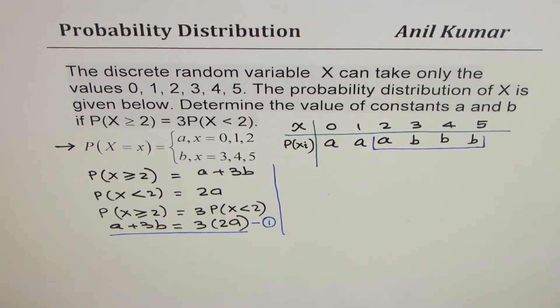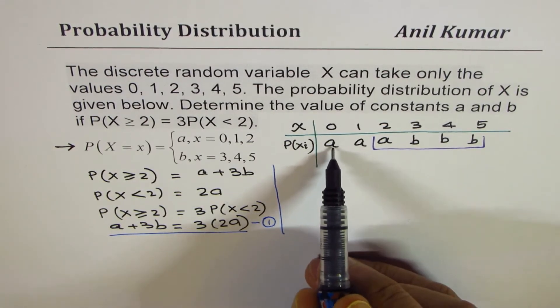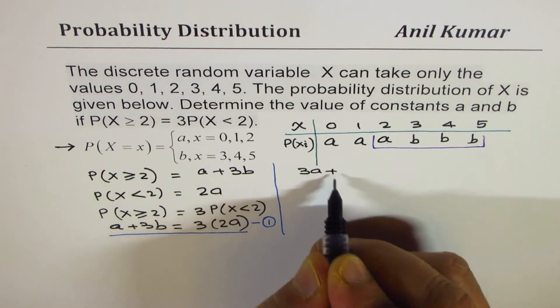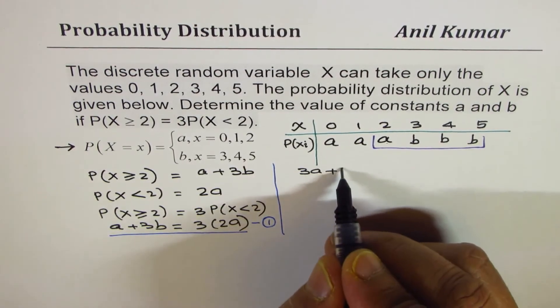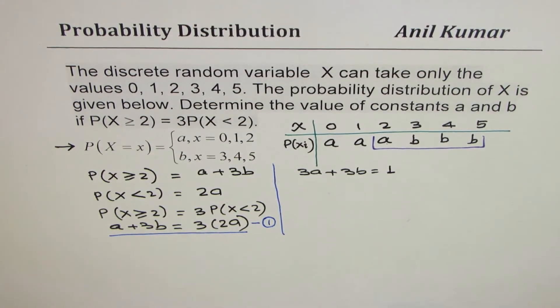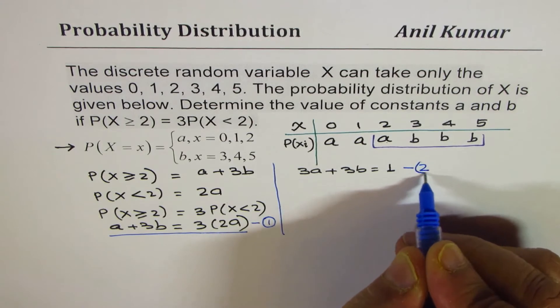How do you get the other equation? To find the other equation, we know the probability sum should be 1. That means 3a + 3b equals to 1. So we get the second equation. Let me call this as equation number 2.